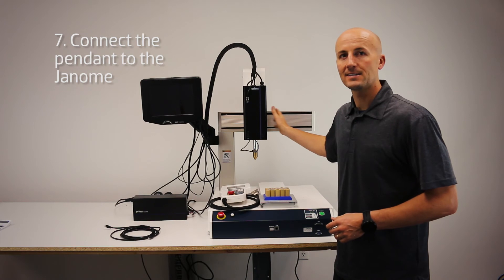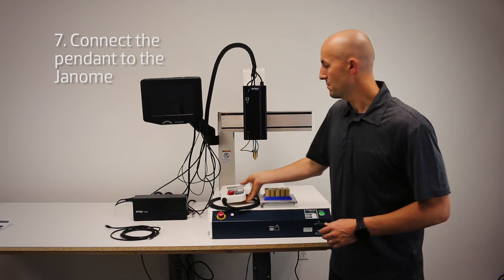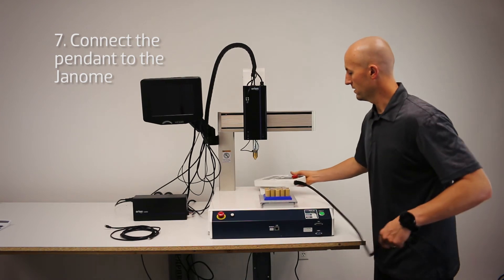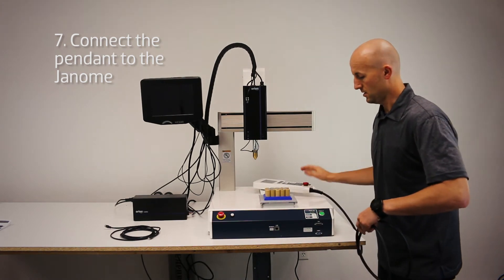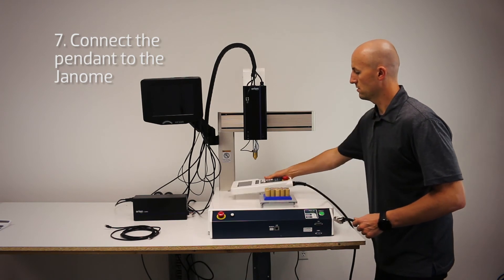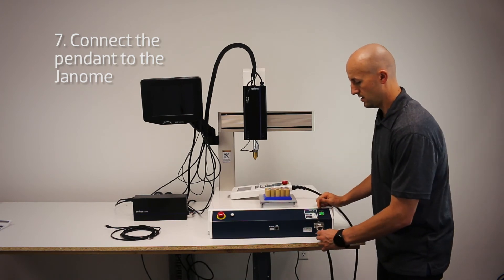To control the CNC, you have this pendant that needs to be plugged into the front of the Janome. That just goes right here.